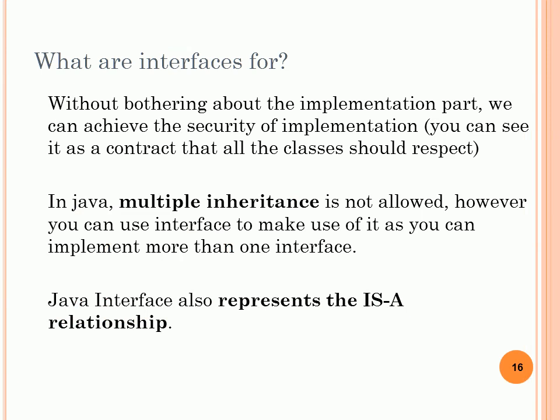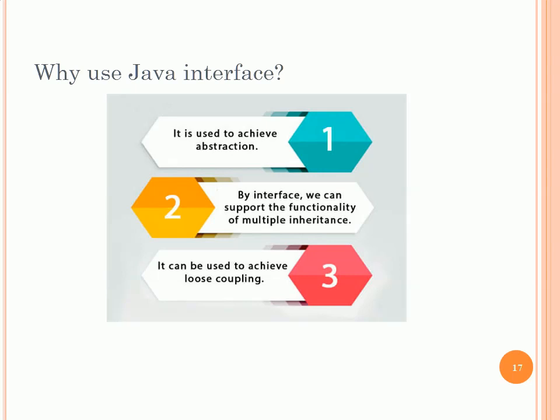Why do we need interfaces? Without worrying about the implementation part, we can achieve security of implementation. Interfaces act like contracts that all classes must respect. Another benefit: Java does not allow multiple inheritance for classes, but with interfaces we allow multiple implementation. Also, Java interfaces represent the 'is-a' relationship that you have studied in UML.